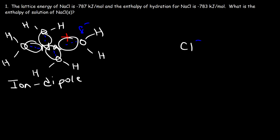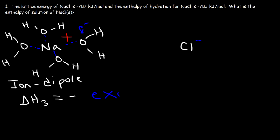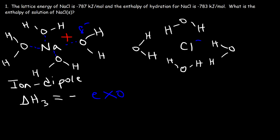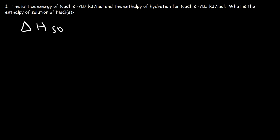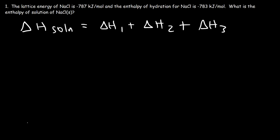Each of these ion-dipole bonds that are formed releases energy, so the third reaction is an exothermic process. As we create those ion-dipole bonds, energy is released — whenever two particles approach each other and form a bond, it's exothermic. A lot of energy is released when the sodium and chloride ions are solvated by water, so delta H3 is highly exothermic. The enthalpy of the solution is the sum of delta H1, delta H2, and delta H3, because if you add up those processes, the net result is that solid sodium chloride is dissolved into the aqueous state.